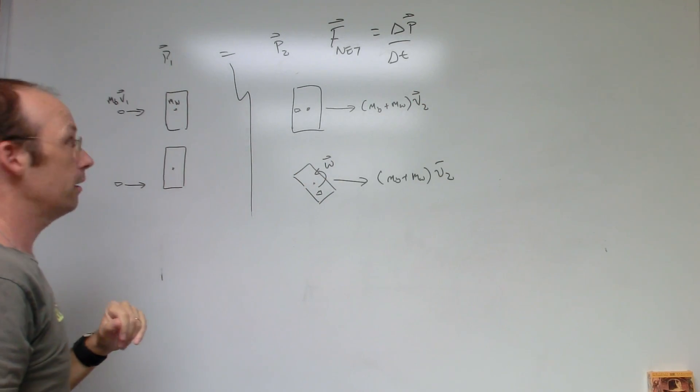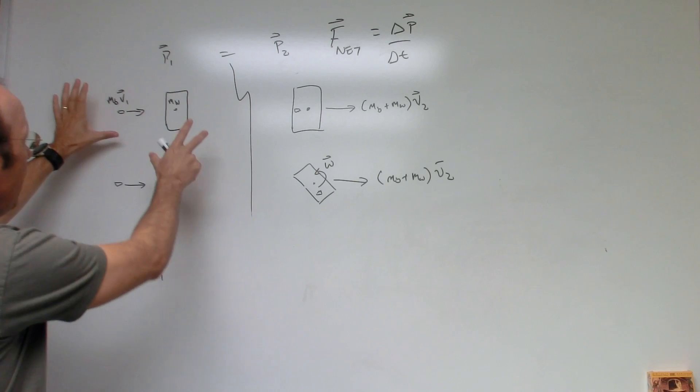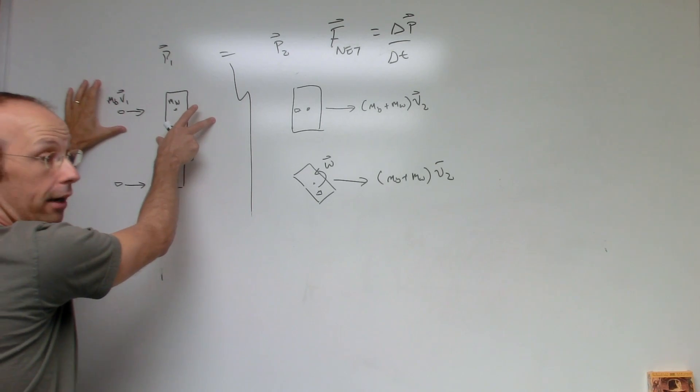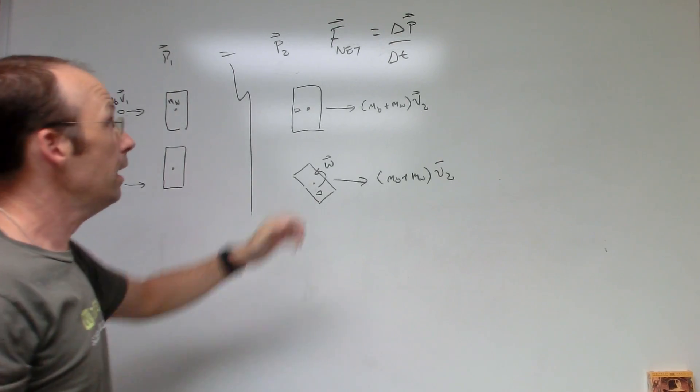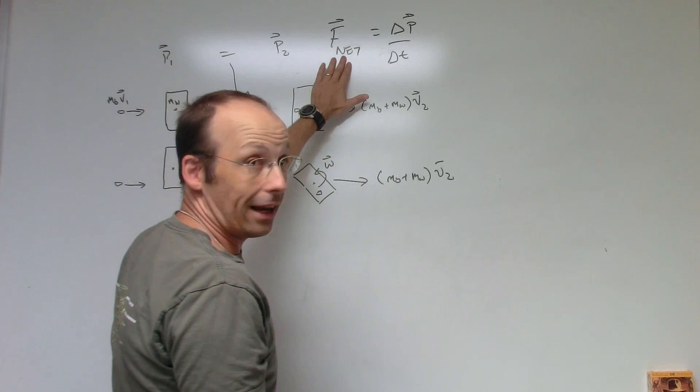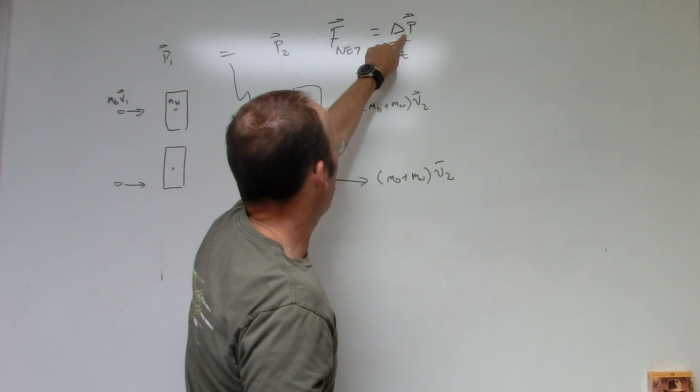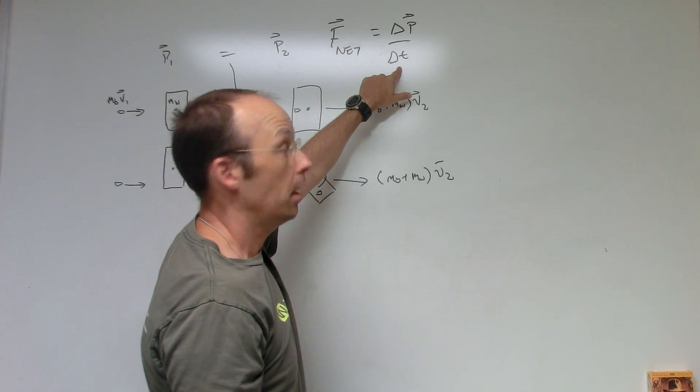So here I have the bullet hitting a block dead on center. The bullet gets embedded and it moves off at some speed. Now how would I find that speed? Well, if I take the bullet plus the block as my system, then I can use the momentum principle.